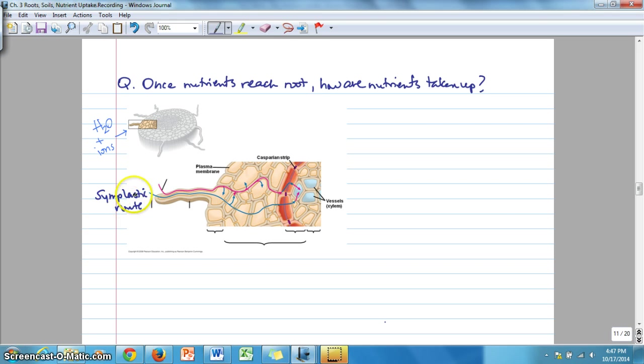And you should be able to name all the regions of the root here, the epidermis, the cortex, the endodermis, the pericycle, and then the vessel elements. Remembering that to access the symplastic route, these nutrients have to pass through the cell membrane somewhere along the way here. And then they just pass from cell to cell through these openings called plasmodesmata.